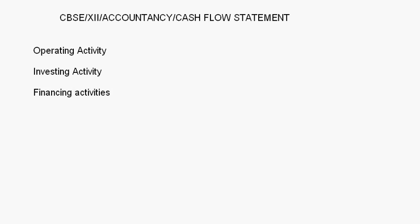Whenever we say cash flow, there are two things: cash inflow and cash outflow. The cash flow statement is going to show the cash inflows and cash outflows of a firm. There are three activities: the first is the operating activity, the second is the investing activity, and the third is the financing activity. Whenever we do a question on cash flow statements, these three activities have to be done separately.